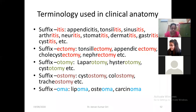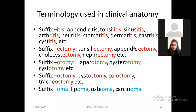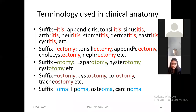Appendix is the organ — if there is appendicitis, the '-itis' suffix is at the end, so this is the inflammation of the appendix. Tonsil — you can see the tonsil in the oral cavity. If there is inflammation of the tonsil, that is tonsillitis. Sinus — inflammation is sinusitis, like that.